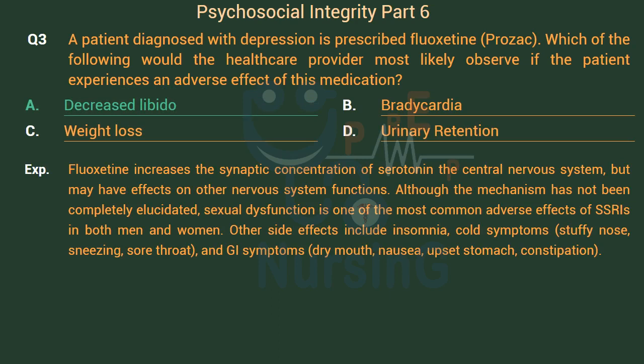Fluoxetine increases the synaptic concentration of serotonin in the central nervous system, but may have effects on other nervous system functions. Although the mechanism has not been completely elucidated, sexual dysfunction is one of the most common adverse effects of SSRIs in both men and women. Other side effects include insomnia, cold symptoms, stuffy nose, sneezing, sore throat, and GI symptoms such as dry mouth, nausea, upset stomach, and constipation.